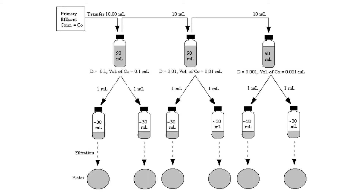This technique includes three steps. First, making serial dilution, followed by filtration and plating, and then plate cultivation and colony counting. The full process will now be described.